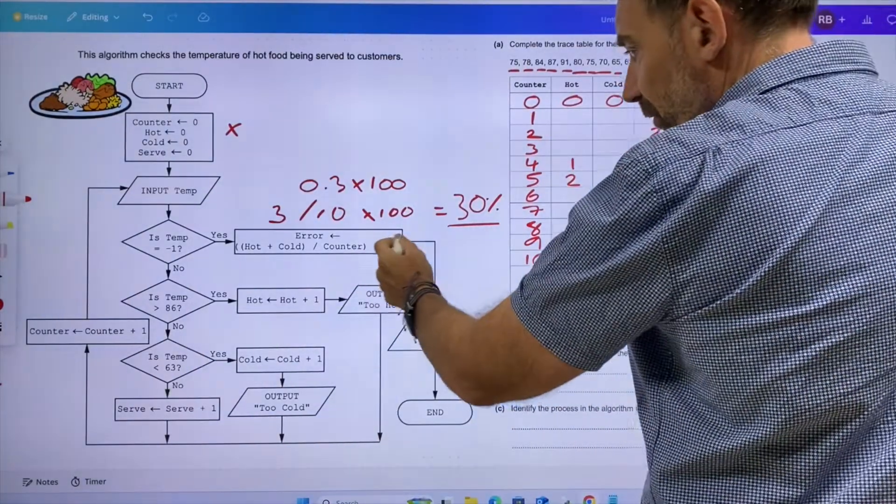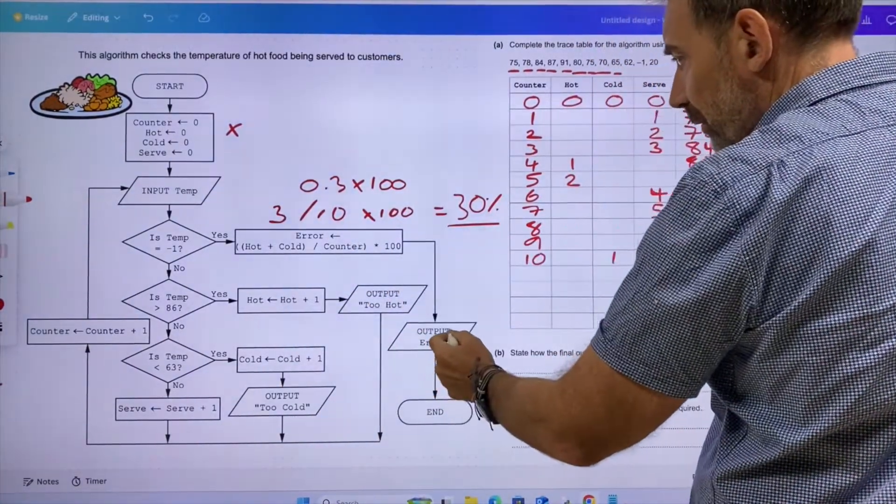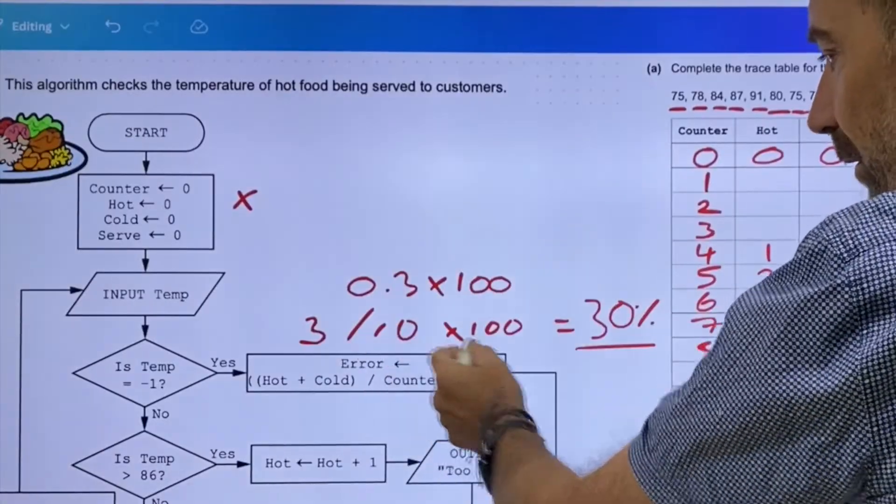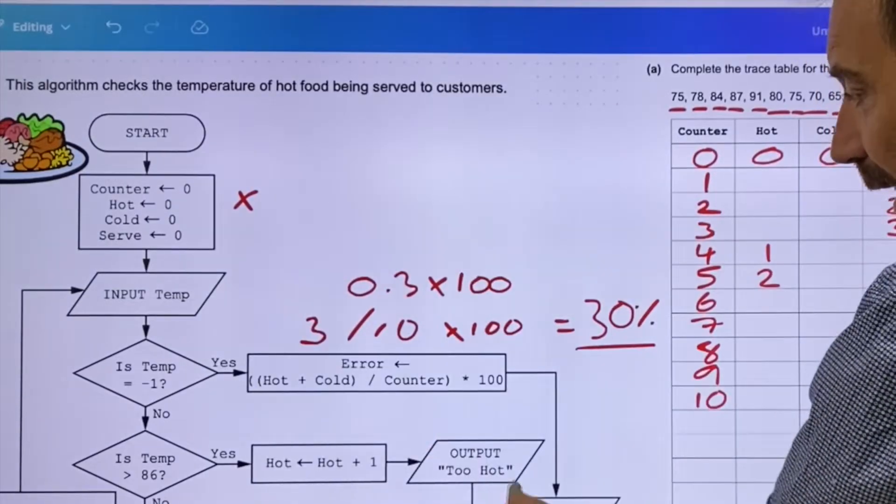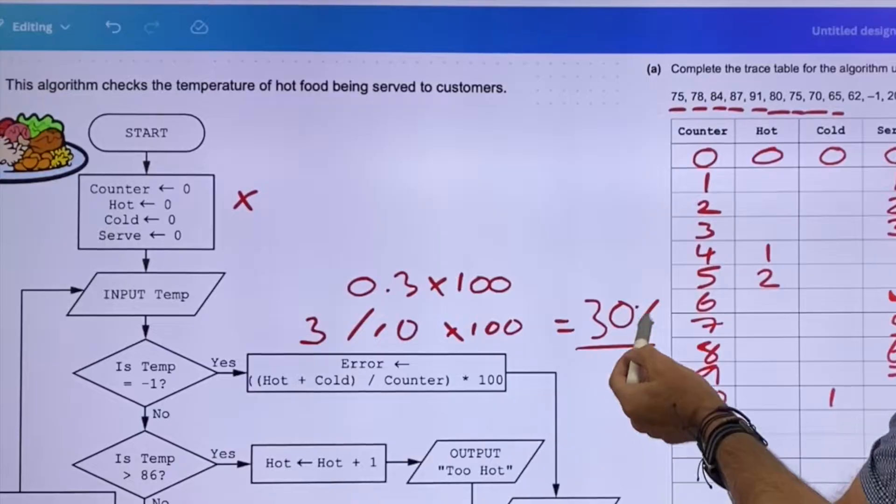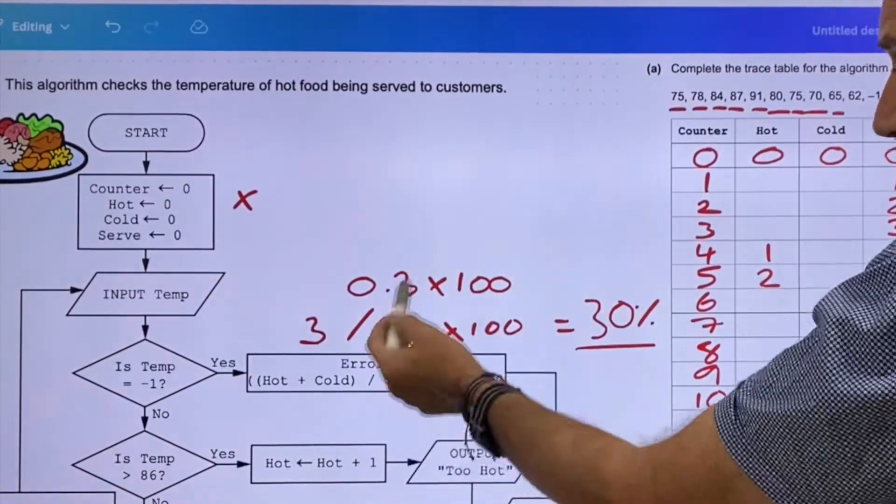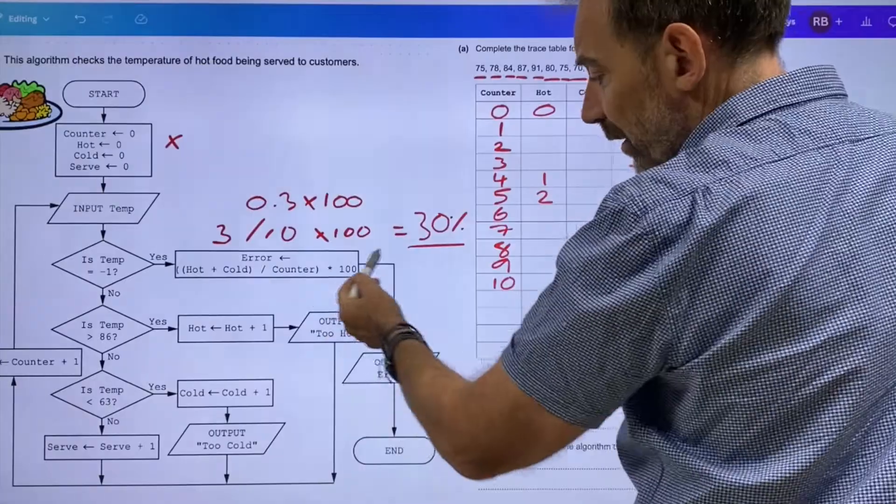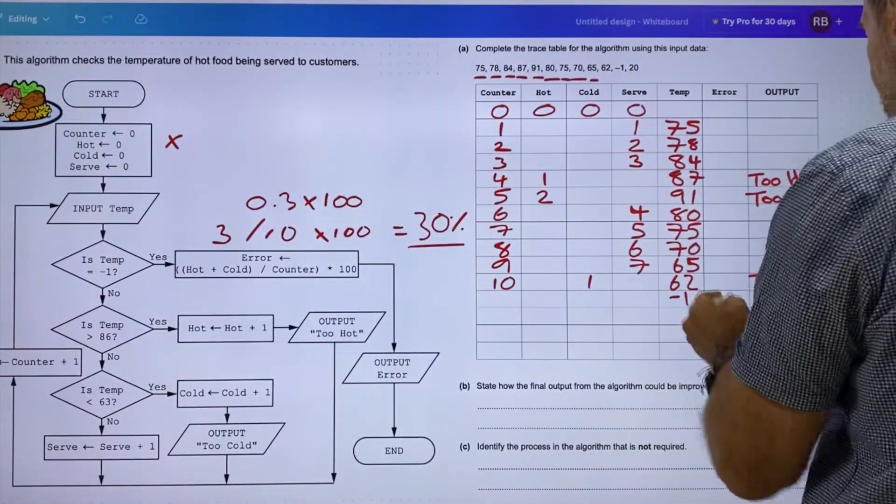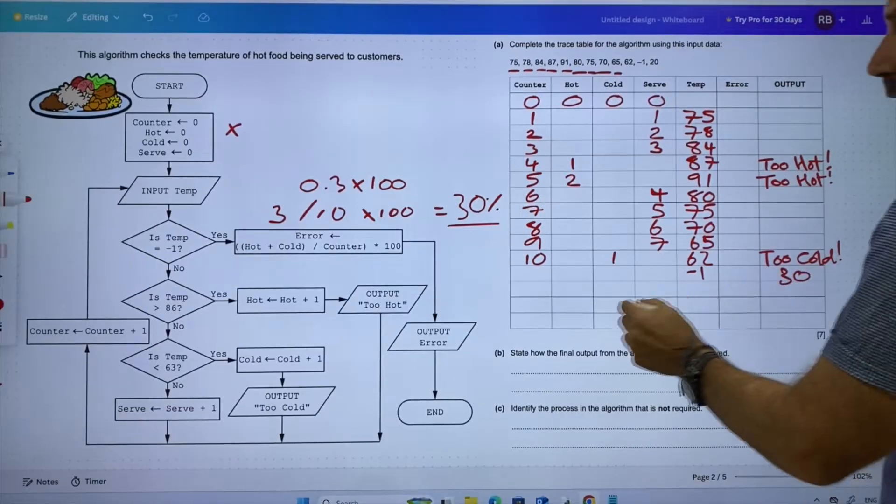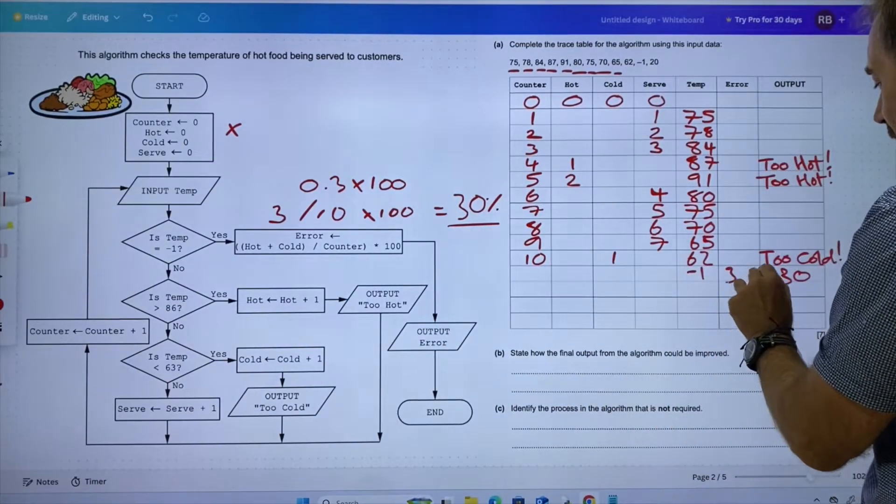So three divided by 10 is obviously 0.3 times 100 equals 30 percent. We've got 'too cold'. We've gone to minus one; we're just going to output error. Sorry, the output error—I thought it was going to stay out by there. So we've got 30 percent. It doesn't say 30 here, but I'm guesstimating that it's about percentage because that's a percentage calculation. So what do we do? Output the error, which would be 30. Error has been assigned the value 30.